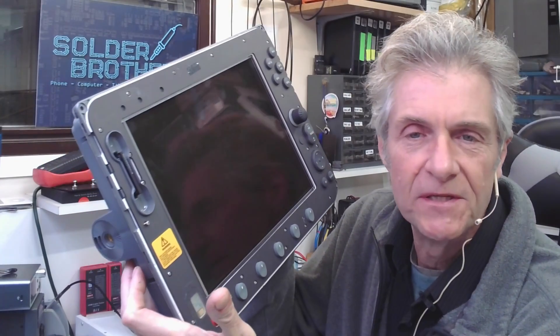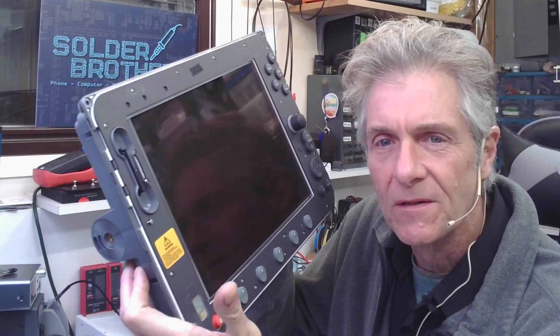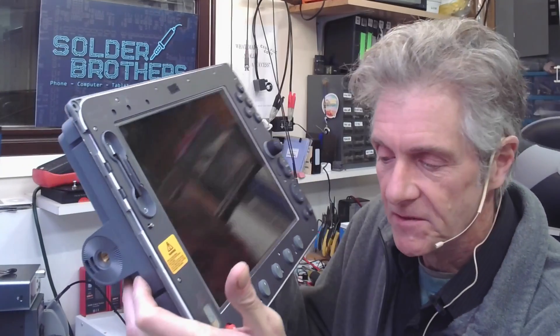Alright, what we got in was a Raymarine CE-0191 chart plotter. Big device. Let's get into it.